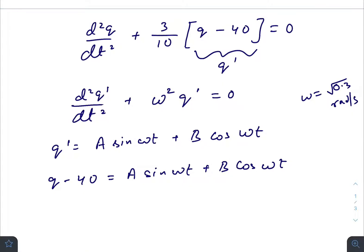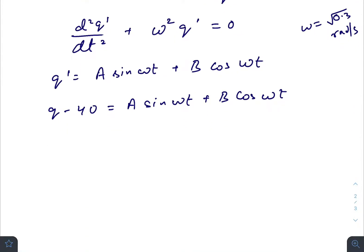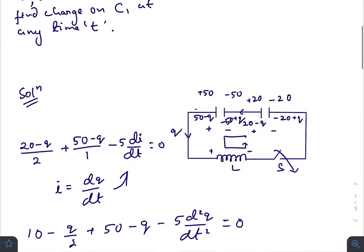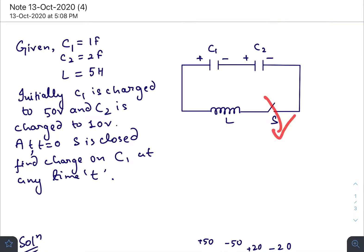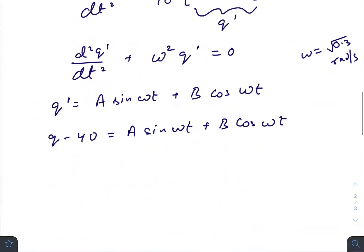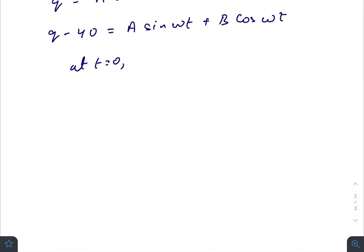Now we need to find out the constants A and B. We can find them by using the initial conditions. If you see the circuit, when you turn on the switch, the charge flowing through the whole circuit is zero. That means at t equals zero, q is zero, and also at t equals zero, the current is also zero.